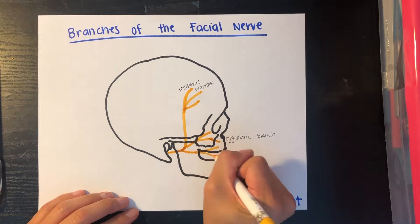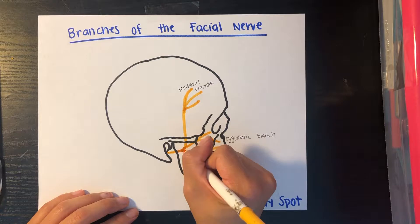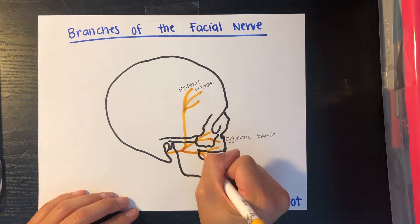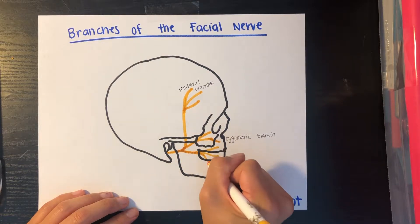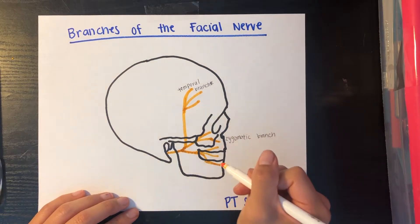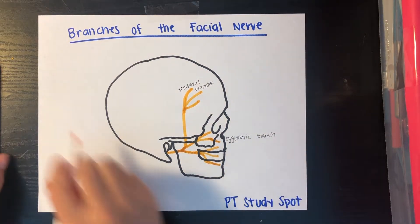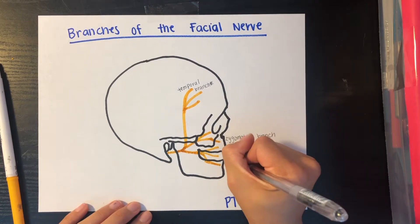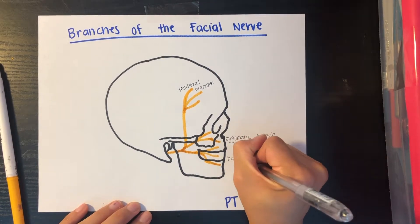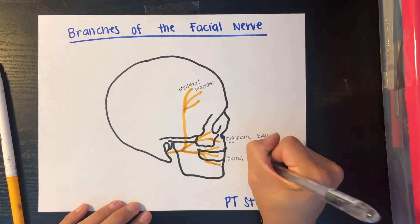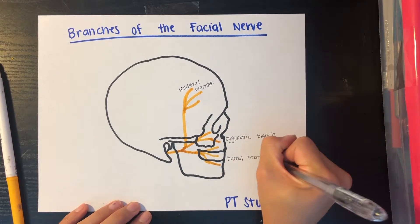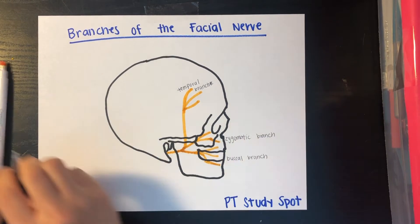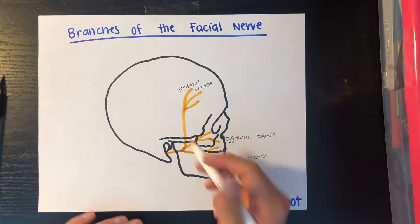Up onto the upper lip and lower lip area you have your buccal branch. This is an important nerve because it innervates the facial expression muscles. We'll explain all the muscles it innervates in the description below.